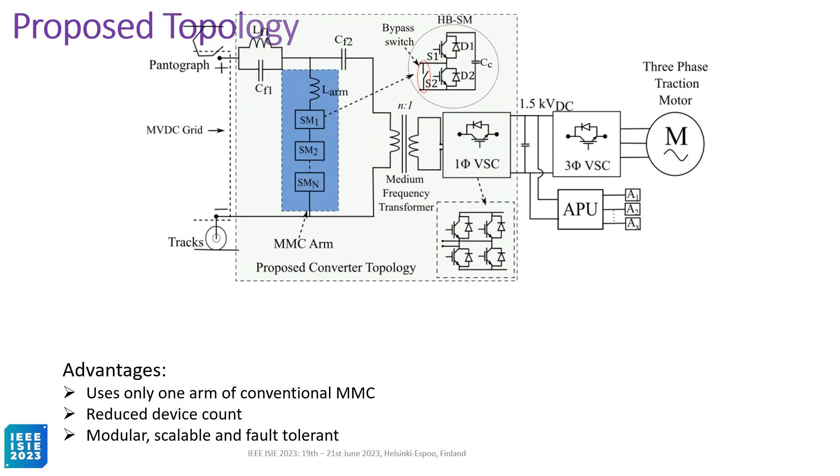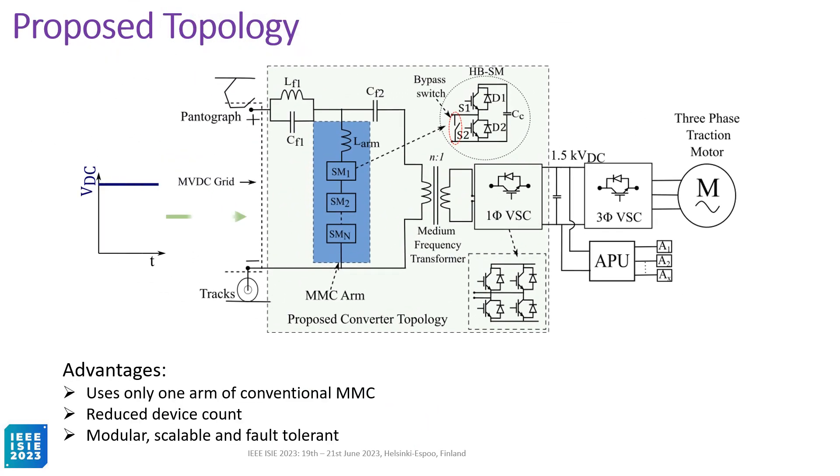This is the proposed topology. It only uses one arm of conventional half-bridge MMC. Hence, the switch count and control complexity are reduced. Further, due to the modular nature of the converter, faulty sub-modules can be bypassed inside the converter.